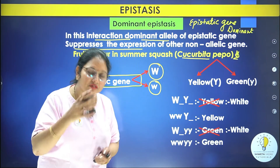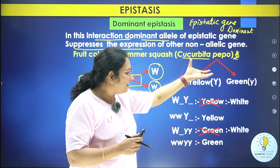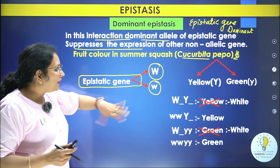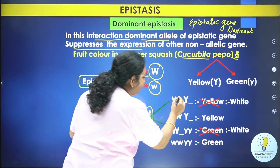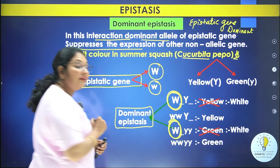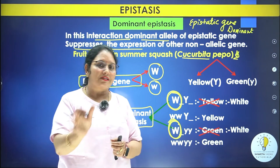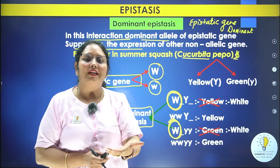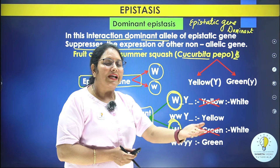In Cucurbita pepo, W is responsible for white color and Y is responsible for yellow color. Wherever capital W is present, white color will appear, and no other gene will be expressed. Capital Y is not being expressed here — even though it is in dominant form, it cannot be expressed because capital W is masking it. Wherever small W is present, capital Y will express, giving yellow color. And when all alleles are recessive, green color appears.